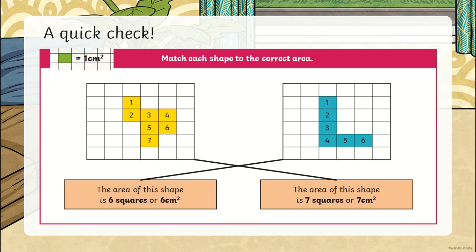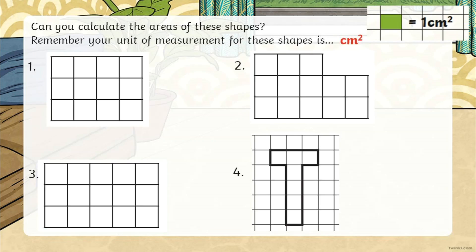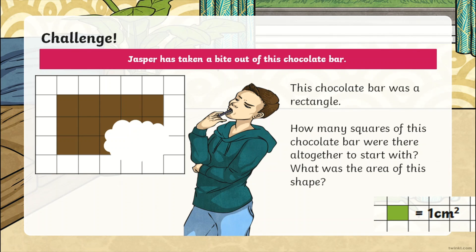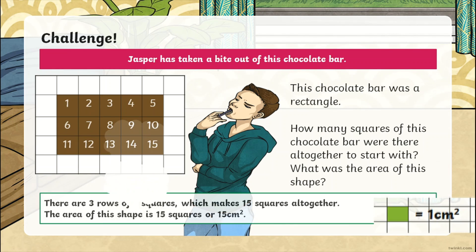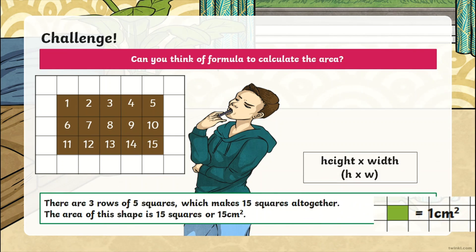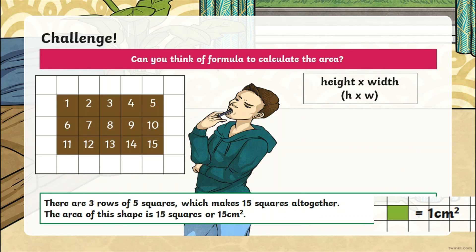Children have plenty of opportunity for independent practice, and in the final challenge of the lesson, they are encouraged to connect finding area by counting squares to the formula for calculating area. We would count the number of squares to find the height, which would be 3 squares or 3 centimetres, and the number of squares to find the width, which is 5 squares or 5 centimetres.